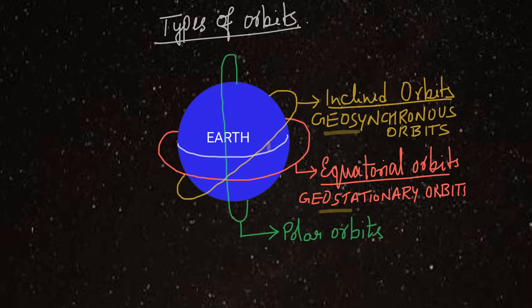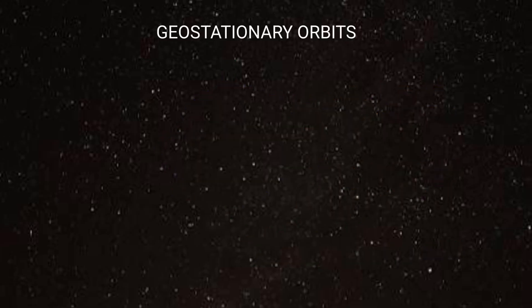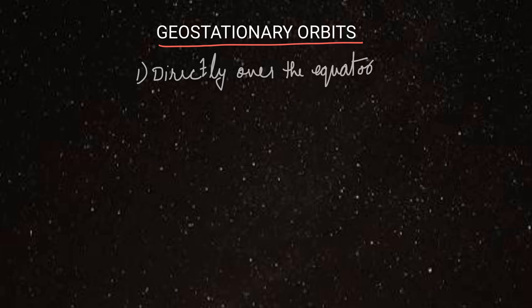Then we have sun-synchronous orbits which are polar orbits. Let us first see geostationary orbits. Some features - first is that they are directly over the equator. So that's why these orbits are circular in shape. And their height is approximately 36,000 km from the surface of earth.